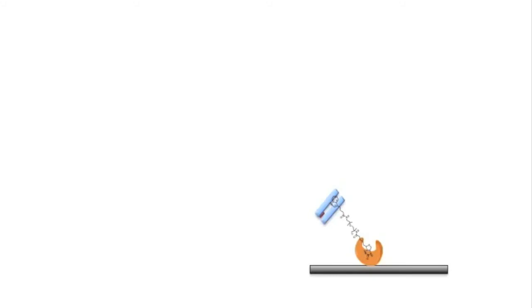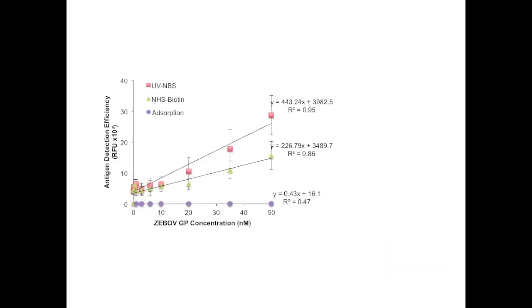The UV-NBS method was compared with two other commonly used immobilization methods: NHS biotin and physical absorption. The KZ52 Fab fragment was immobilized to 96-well plates using all three methods. Antigen detection sensitivity was determined using increasing concentrations of ZEBOV-GP as the antigen, and then an anti-ZEBOV-GP antibody was added and quantified by an HRP-conjugated anti-Fc antibody as a reporter. This study demonstrates successful immobilization of biotinylated Ebola-detecting Fab fragments via the UV-NBS method, yielding a 1031-fold better antigen detection sensitivity compared to direct physical absorption and a two-fold better antigen detection sensitivity compared to NHS biotin functionalization.